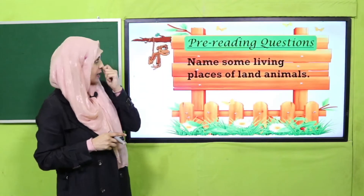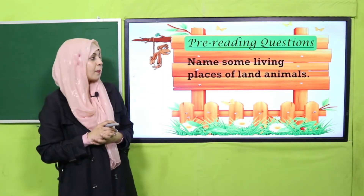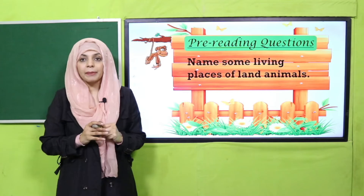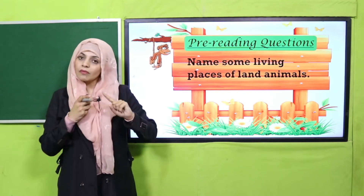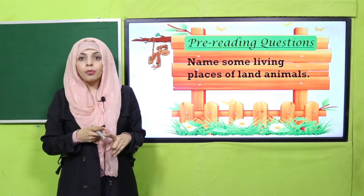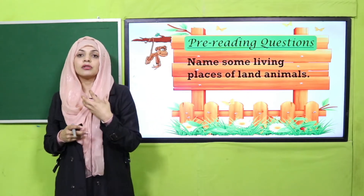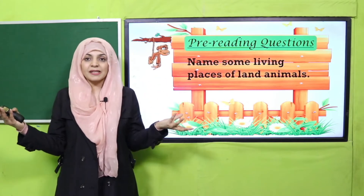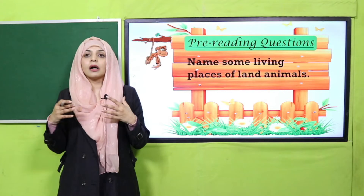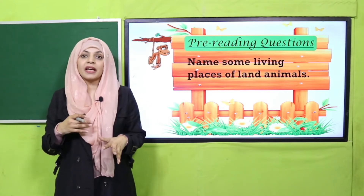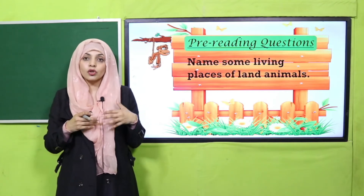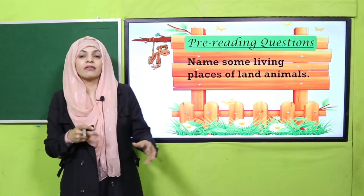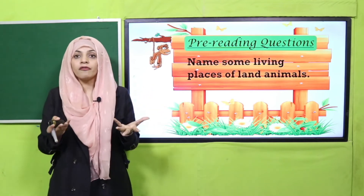My dear students, let's move forward towards the pre-reading question. Name some living places of land animals. Zameen pe jo janwar rehte hain unki kuch rehne ki jagahein hain - forest, desert, polar region. Kuch ice mein rehte hain, kuch sehra mein sand mein rehte hain. Some animals live in forests because they like trees. Some animals live underground - like earthworms in soil, rats and rabbits which make burrows and go inside the ground. These are different living places of animals.